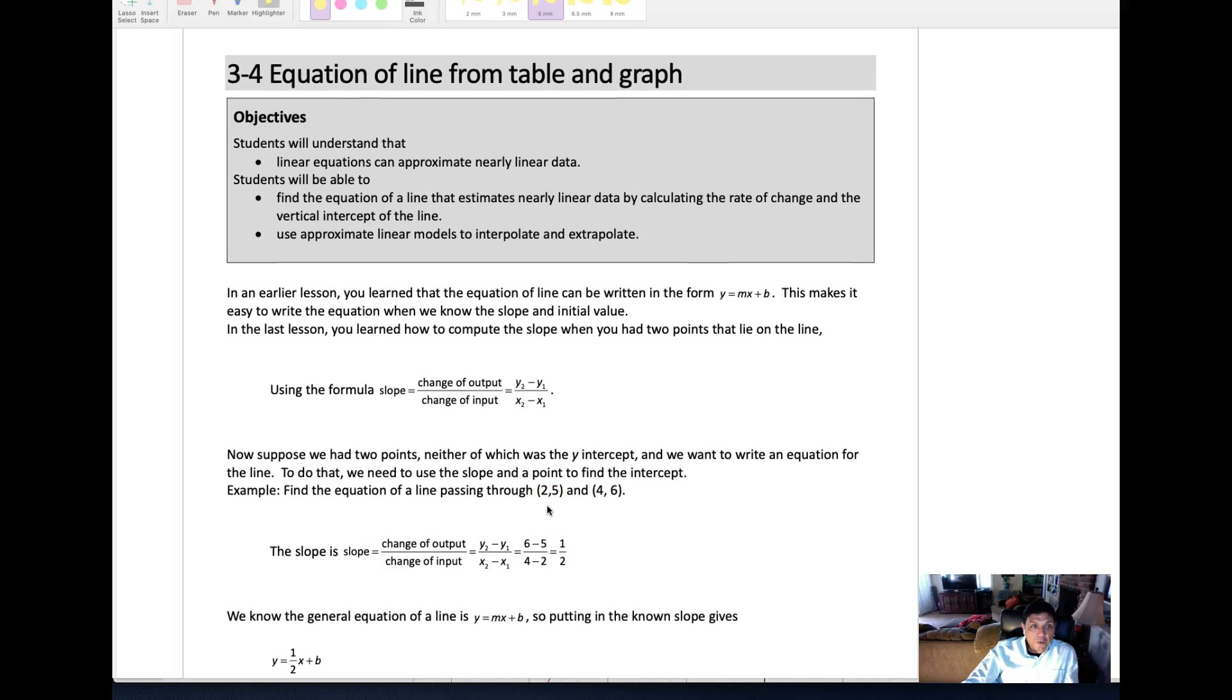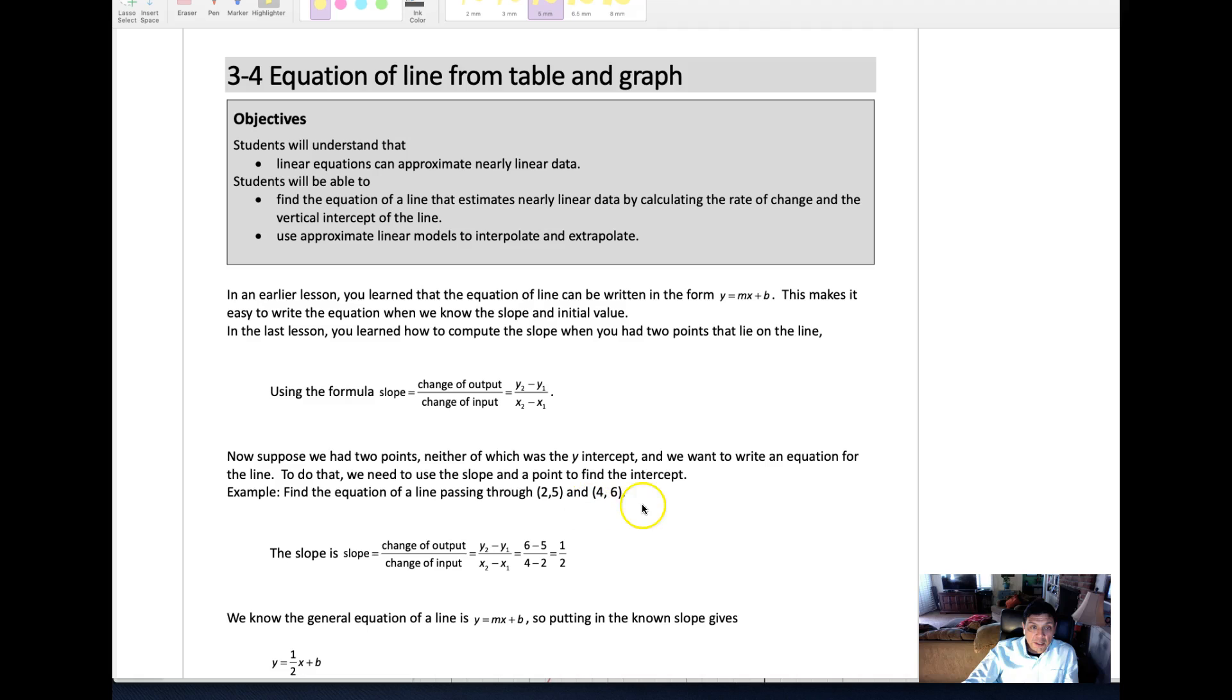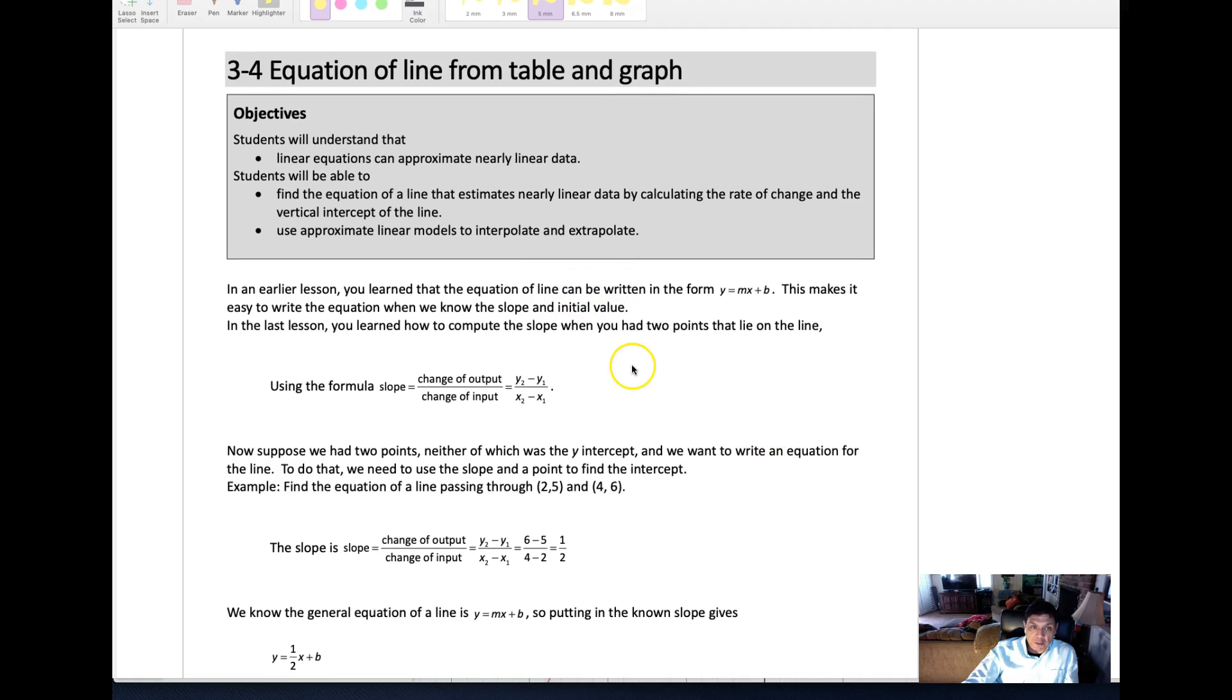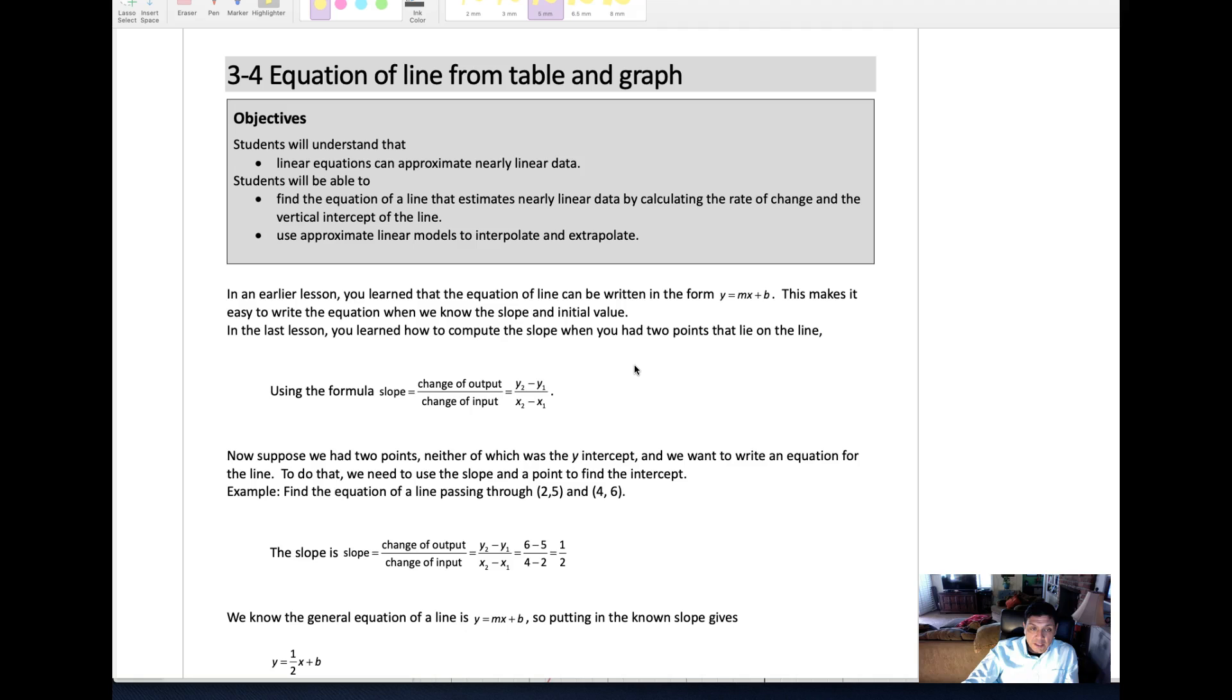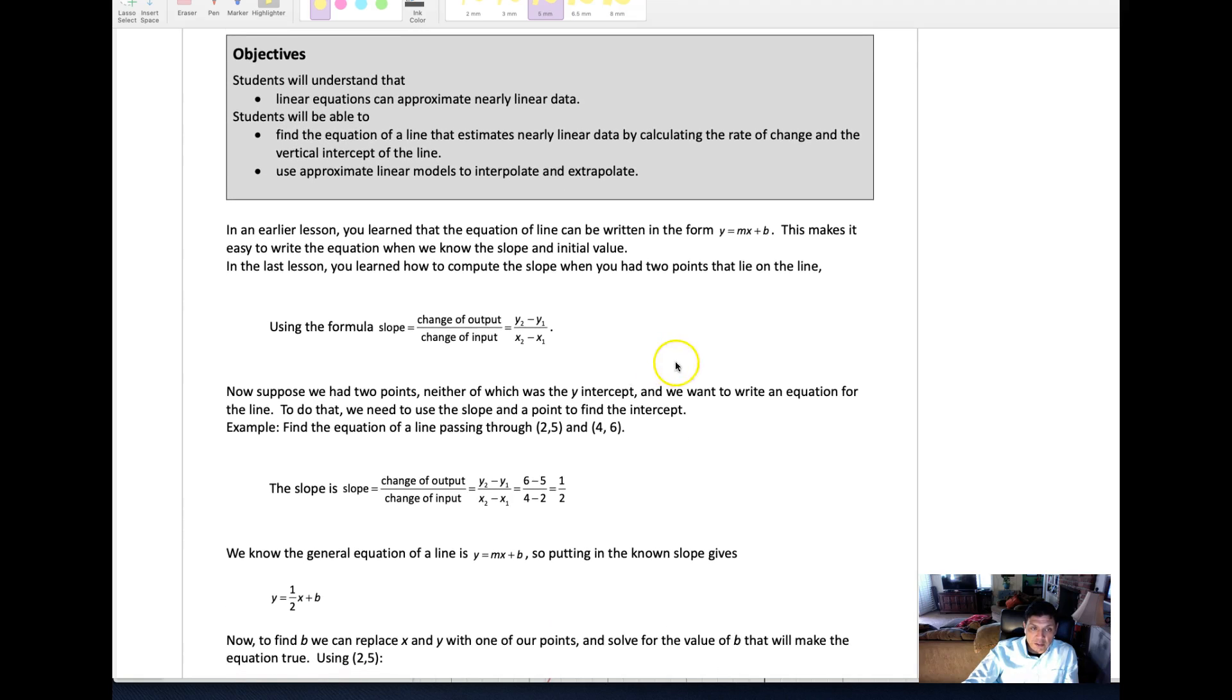This is for lesson 3.4 from the lesson book, and we continue on with equations of linear equations. We're looking at lines, and in this case we're going to look at tables and graphs. In the last case we were calculating slope from tables, but we want to look at these equations.